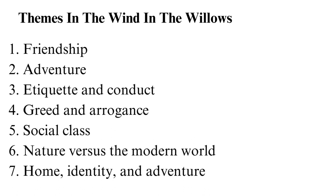Adventure is another major theme — the four friends get into difficult and sometimes fun situations. For example, Rat and Mole go to seek Badger's home, and in another instance, Toad seeks excitement, which leads to his arrest once he's caught driving carelessly. Etiquette and conduct also guide the animals along the river. There is a code called animal etiquette which guides their interactions, such as when the friend group tries to help Toad overcome his obsession with motorcars and his arrogance. Their society also has consequences for those who do not abide by the rules.